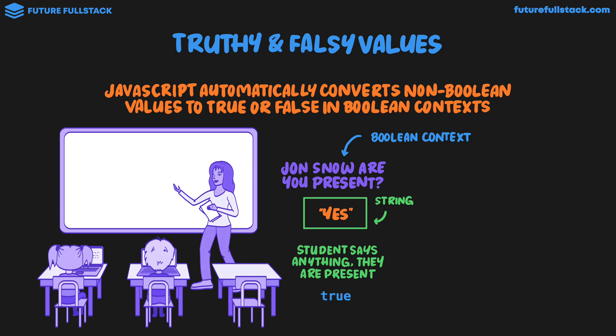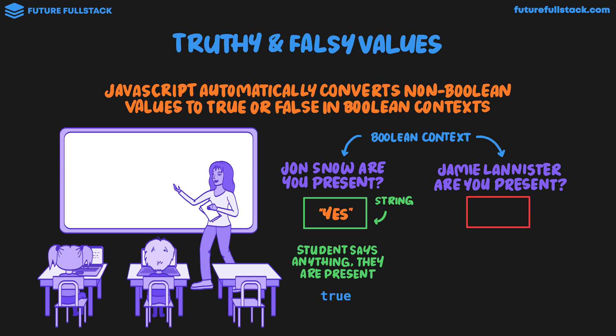Looking at when a student isn't present — if the teacher asks "Jamie Lannister, are you present?" Again this is a boolean context, and if Jamie isn't present, there is no response. It's kind of like we're getting back undefined. Because Jamie isn't present, it's not like he's shouting boolean false — he just isn't there. And we can think of this as undefined. So no response means they are not present, and in JavaScript terms it's like we're getting back false.